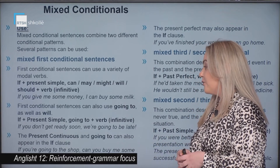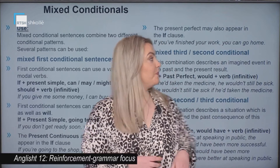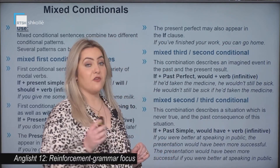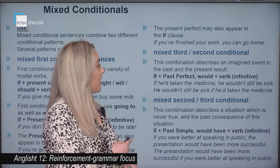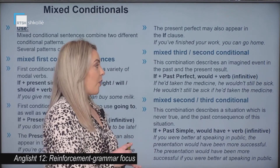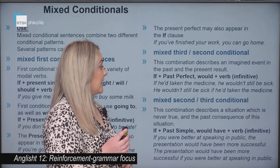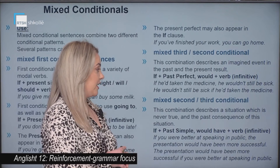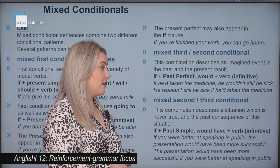The present perfect may also appear in the if clause — for example, 'if you finish your work, you can go home.' Another pattern is the mixed third with second conditional. This combination describes an imagined event in the past and the present result. It is formed by if plus past perfect, then would plus verb in the infinitive. For example, 'he wouldn't still be sick if he had taken the medicine.'